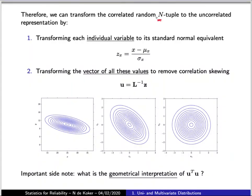If we have n correlated random variables, we can transform any n-tuple of those variables into an equivalent uncorrelated standard normal n-tuple by performing the following transformation.